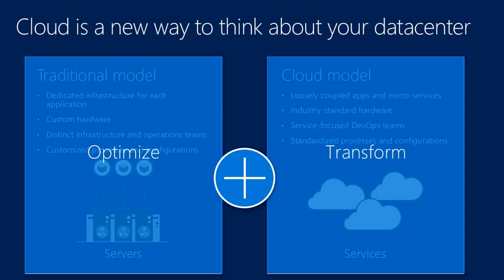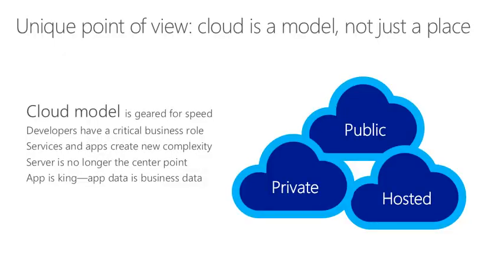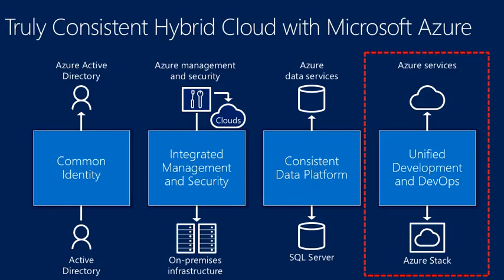Now, what is the benefit? This is the traditional data center model, and what it's supposed to do for us is optimize and transform from traditional custom hardware with dedicated infrastructure for each application and distinct infrastructure and operations teams, into a cloud model which uses industry-standard hardware, a DevOps-focused team, standardized processes and configuration. That leads us to a model we can use to speed up our developers to have a critical business role — with services and apps creating complex solutions with minimal input. An app is basically driven by the data center.